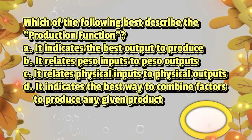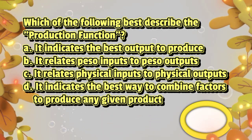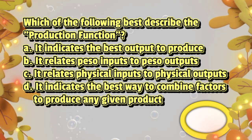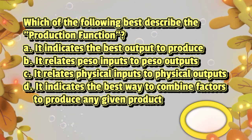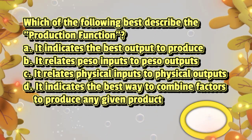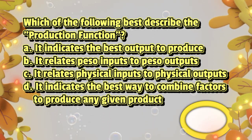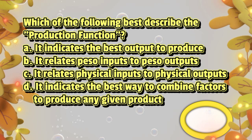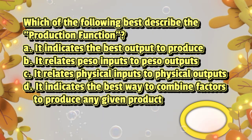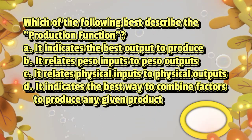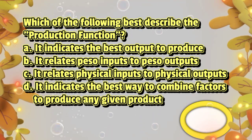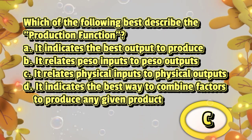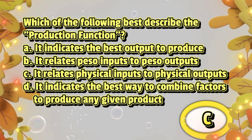Which of the following best describes the production function? A. It indicates the best output to produce. B. It relates peso inputs to peso outputs. C. It relates physical inputs to physical outputs. D. It indicates the best way to combine factors to produce any given product. The answer is letter C.